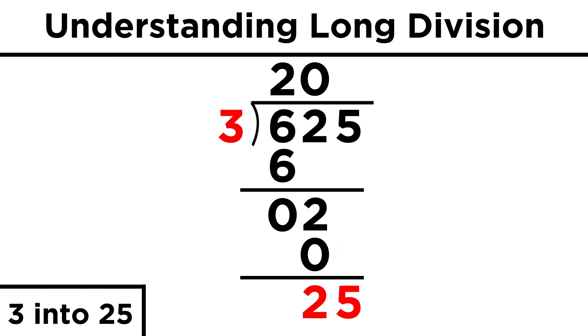Three fits into twenty-five a little more than eight times, because three times eight is twenty-four. So let's put an eight here. Then eight times three is twenty-four, as we said, and subtracting from twenty-five, we get one.